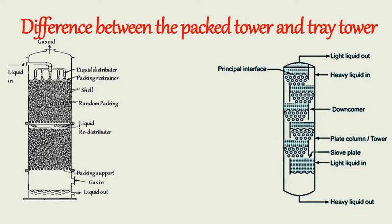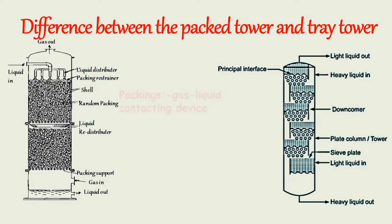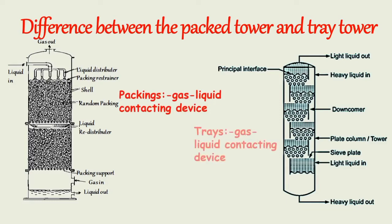The packed column provides continuous contact between the vapor and liquid phases throughout the length of the contactor. Plate columns provide stage-wise contact between the phases at a number of discrete stages. In packed columns, packings work as the gas-liquid contacting device, whereas in plate columns, plates work as gas-liquid contacting devices.